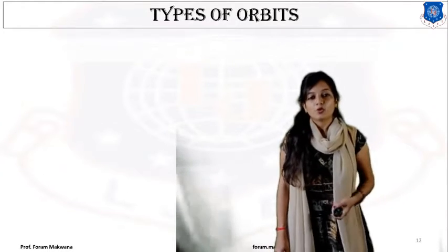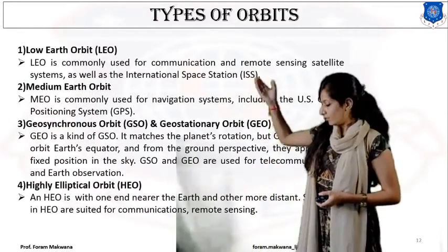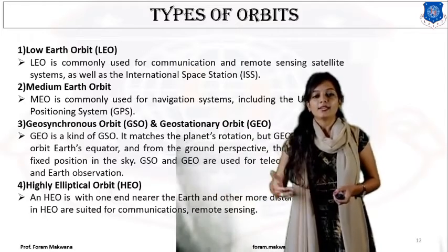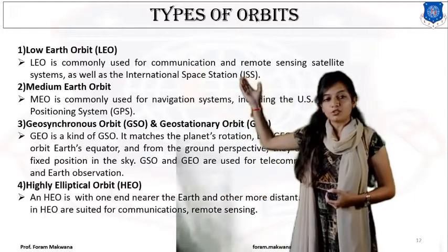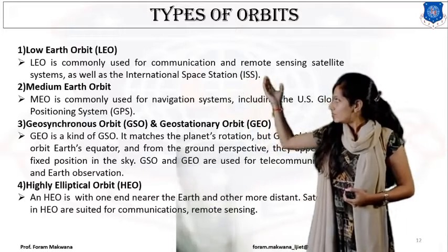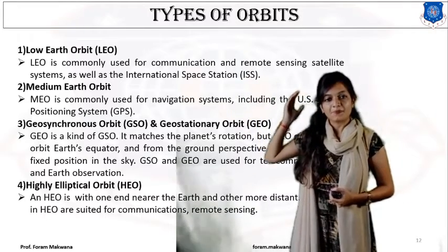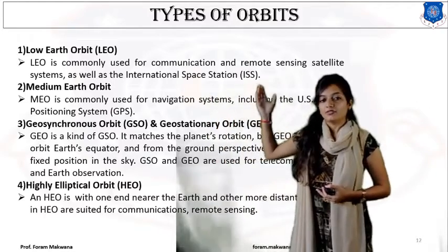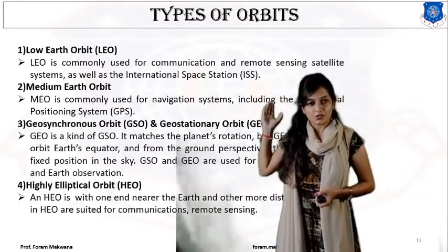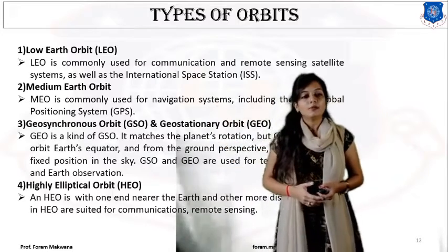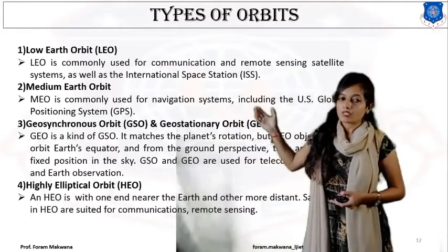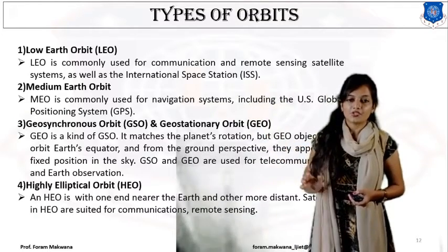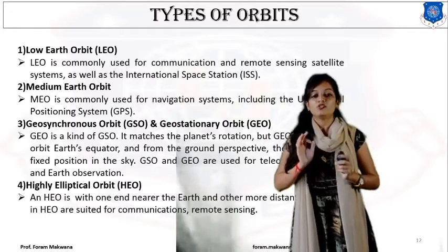Based on the types of orbit — LEO, MEO, GEO, and HEO — we can identify their applications. LEO is used for communication and remote sensing purposes, such as the International Space Station. MEO satellites are commonly used for navigational systems, including the US GPS system.